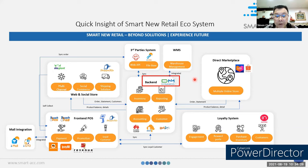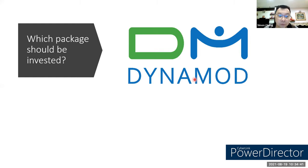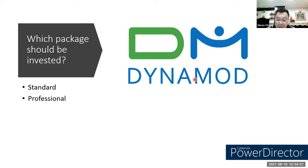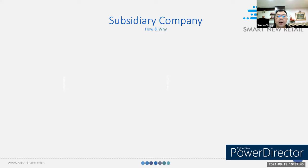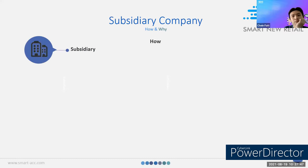This is very important for you when you want to sell the package to your prospect. You need to know this is the package you should introduce them — we call it subsidiary company. So in Dynamo, which module should you invest? We have three packages for the interior side: Standard, Professional, and Enterprise. May I check with you which package the subsidiary module falls under? So the subsidiary module is basically like this.